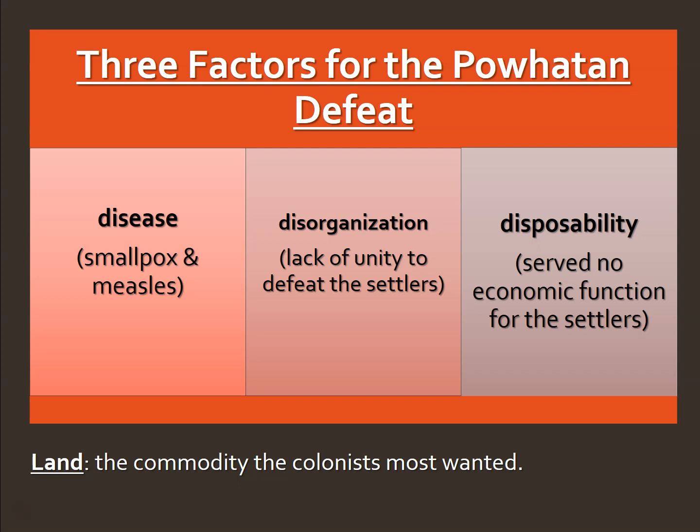What explains the Powhatan defeat? We call these the Three Ds — just as earlier we had the three Gs (God, glory, and gold), this time it's disease, disorganization, and disposability. Disease we've already covered. Disorganization refers to the fact that Native Americans didn't all belong to the same tribe and lacked unity on how to deal with white settlers. Disposability means the English around Jamestown didn't see much use for Native Americans — they stood in the way of tobacco plantations. So you had a land-hungry, well-armed white settlement against a disease-weakened, disorganized group not seen as valuable.